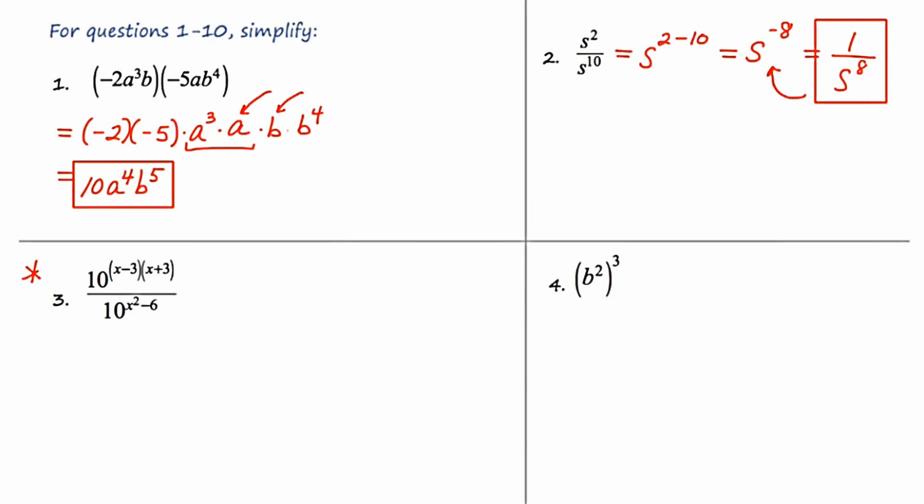I'm going to retain my base of 10, but then I'm going to set up a subtraction problem with x minus 3, x plus 3, minus the expression x squared minus 6. Now in order to do this subtraction, I'm going to need to foil the first groupings of x minus 3 and x plus 3. And that's going to get me x squared minus 3x plus 3x, which are going to cancel out, and then minus 9.